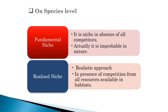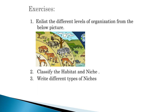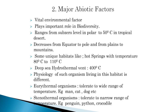There are different types of niches at the species level: fundamental niche and realized (or realistic) niche. Moving on, our next topic is major abiotic factors. Abiotic factors are the non-living factors that play an important role in maintaining the balance of the environment. Temperature is a vital environmental factor that plays an important role in biodiversity and ranges from sub-zero levels in polar regions to 50 degrees Celsius in tropical deserts. It decreases from the equator to the north pole and from the plains to the mountains. Some unique habitats like hot springs have temperatures of 80–110°C, while deep-sea hydrothermal vents reach up to around 400°C.